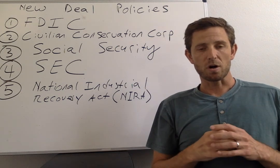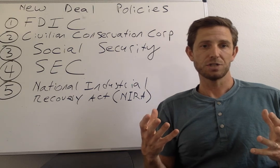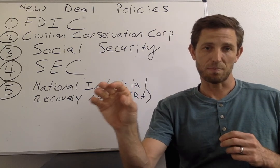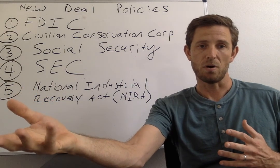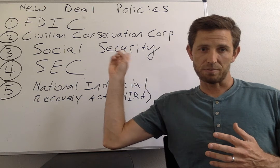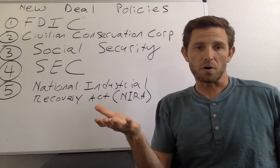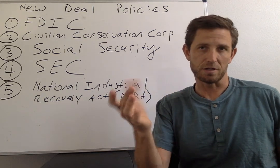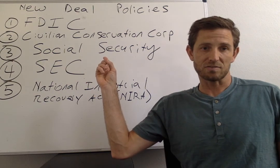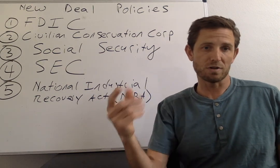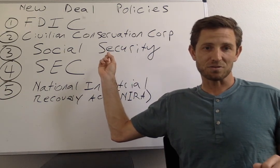The way Social Security works is that while employed and of working age, people pay into this system through a particular tax, and then upon retirement a person can apply for benefits. You've probably seen this at your job: if your employer is taking out taxes labeled FICA, these are Social Security taxes. So you're paying into that, and then when you retire you'll be able to draw benefits from Social Security.